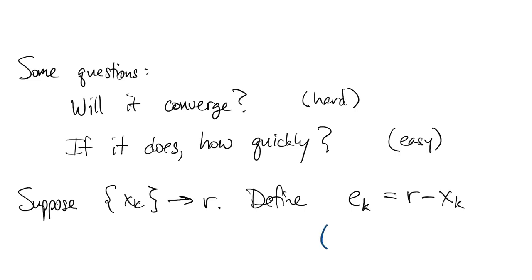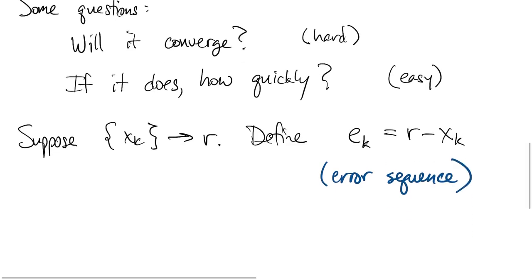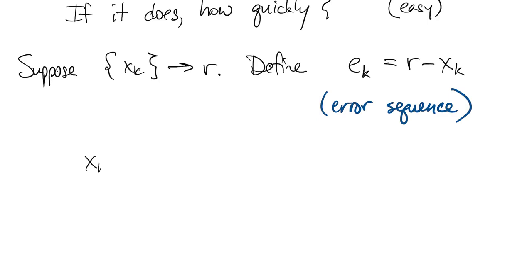Then the sequence of errors, which is the difference between r and xk, satisfies its own iteration.